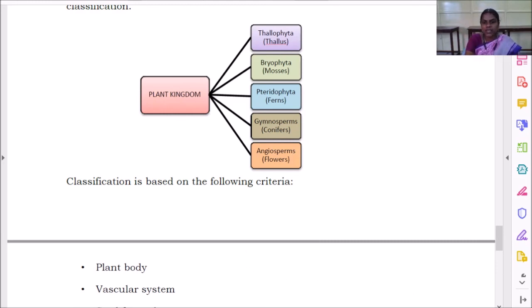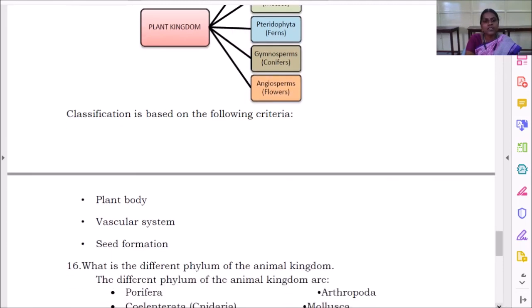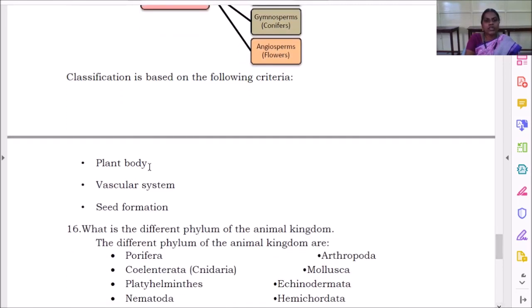Classification is based - we had classified the plant kingdom based on the following criteria: plant body, vascular system, and seed formation. Plant body structure, vascular system, and seed formation. This is how it will be classified.